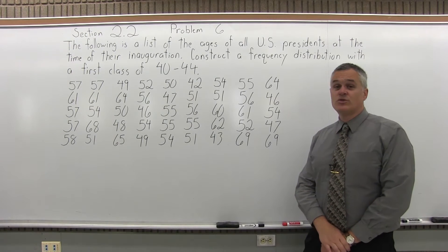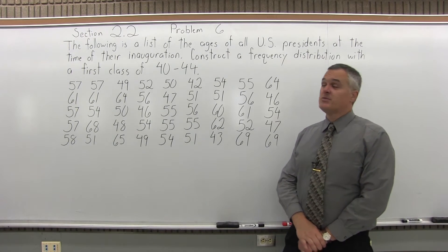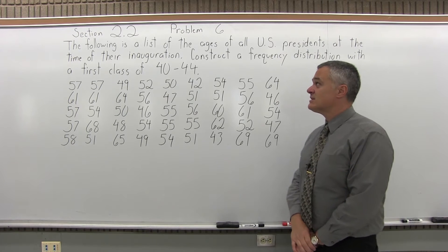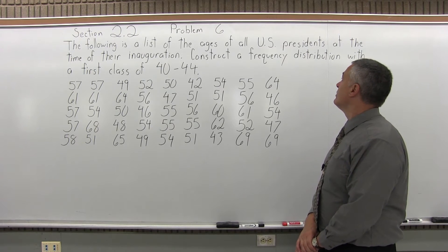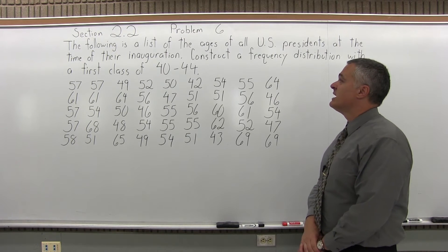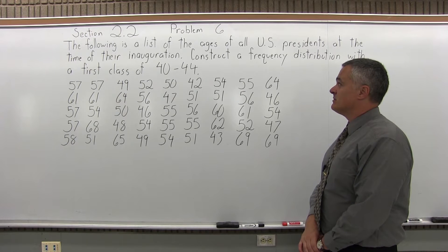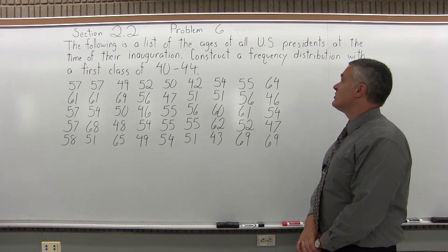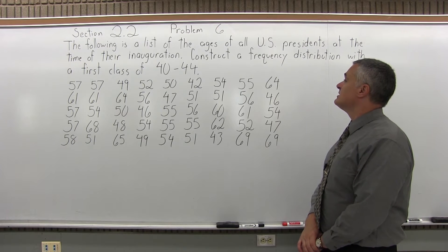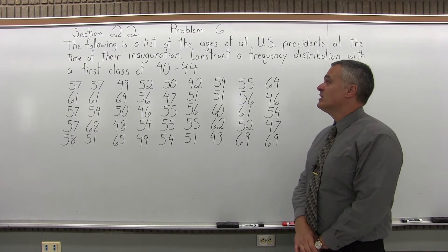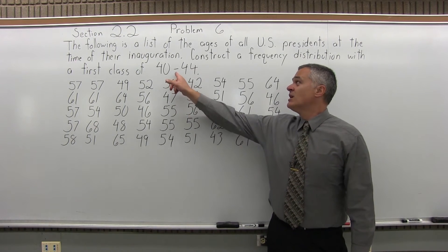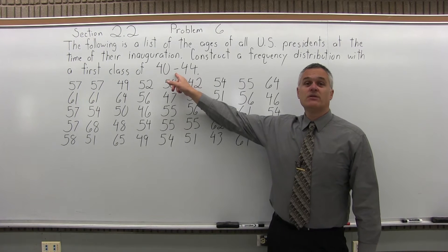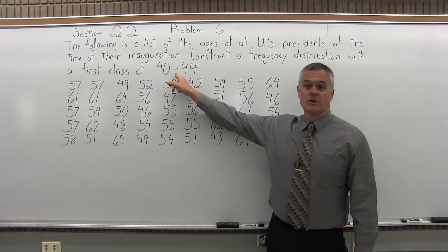This is Section 2.2, Problem 6. It says the following is a list of the ages of all U.S. presidents at the time of their inauguration. Construct a frequency distribution with a first class of 40 to 44.